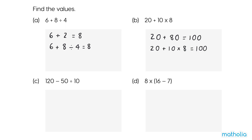C: 120 minus 50 divided by 10. Divide first. 50 divided by 10 equals 5. 120 subtract 5 equals 115. So 120 subtract 50 divided by 10 equals 115.